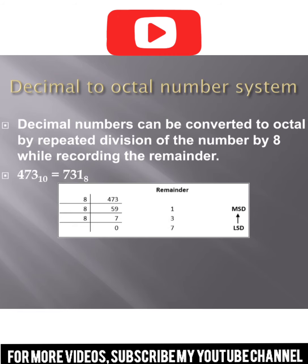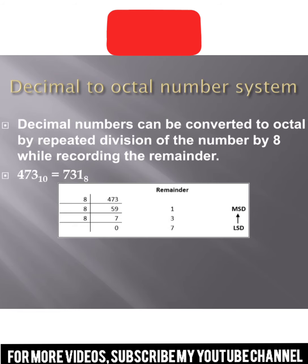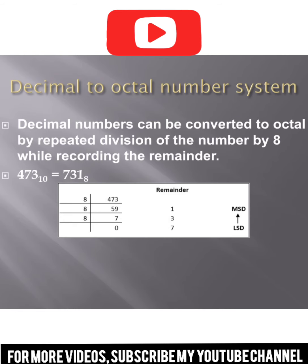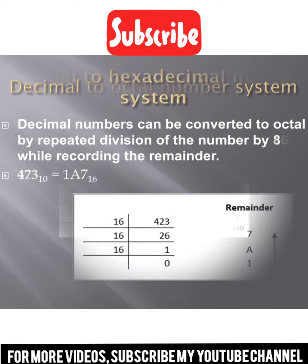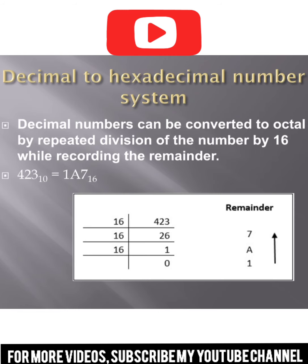We convert 731 to octal number system — we convert to octal number system. Next, we convert decimal to hexadecimal number system.